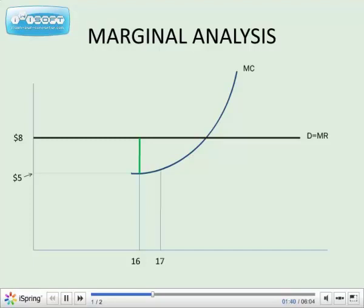Look at unit number 17. Reading up to marginal cost and over, we see the marginal cost is rising. To make it simple, let's call that $6. But we can still sell this unit at $8, so we still are $2 to the good for selling that unit. So, we should go ahead and produce it and sell it.